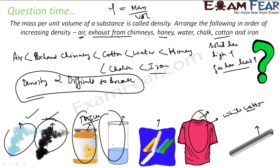So the final increasing order of density is: air, then chimney exhaust, then cotton, then water, then honey, then chalk, then iron. Air is the most easy to break — if you wave your hand, you are actually breaking the air and you don't feel that you have done any extra work.